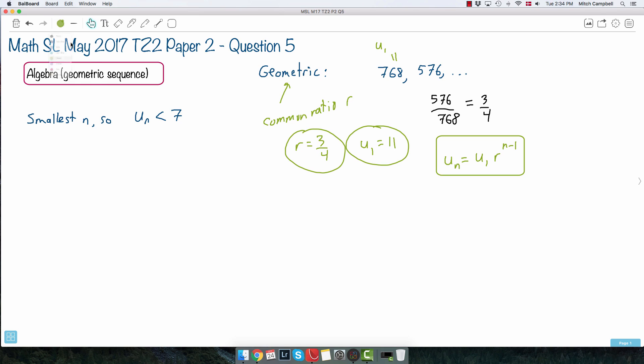So, in this case, let's do the nth term of this geometric sequence. So, we're going to say, then, that un is going to be u1, which is 768, times r, which is 3 fourths, to the power of n minus 1. Now, remember I said don't do 768 times 3 fourths. Okay? Do it like this.